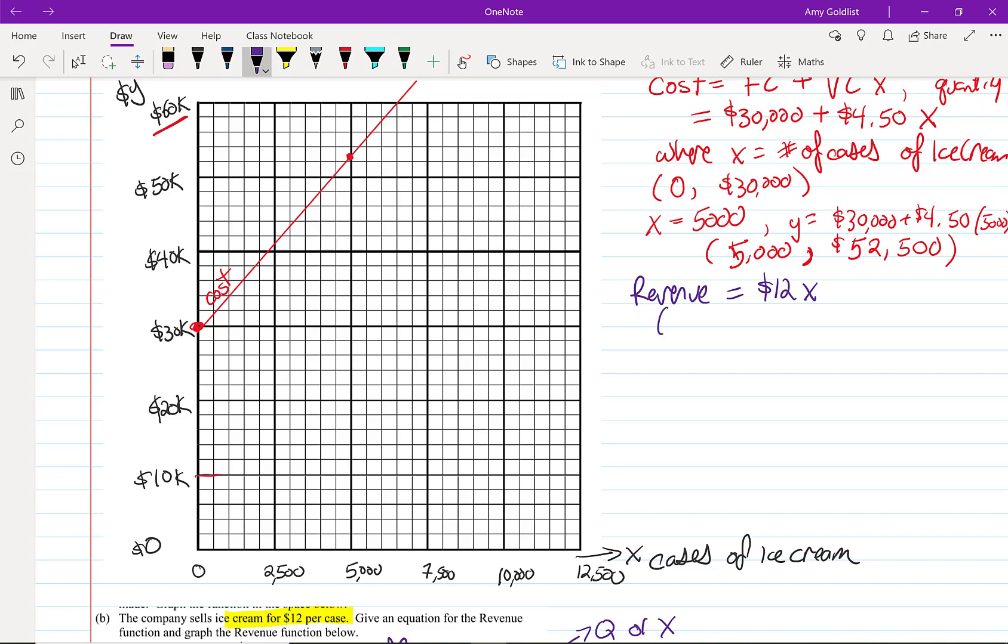Let's put this on the exact same chart. The intercept of revenue is easy. If we sell no ice cream, we make no money. Expect 0, 0 to be a point on every revenue graph.